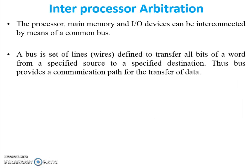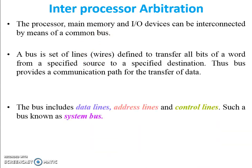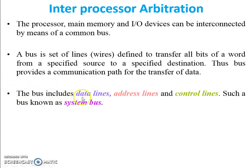The definition of a bus is a set of lines, or a collection of wires, used to transfer all the data or information from one device to another — for example, from an input/output device to a processor or to main memory. The bus provides a communication path for data transfer and includes data lines, address lines, and control lines. Such a bus is known as the system bus.